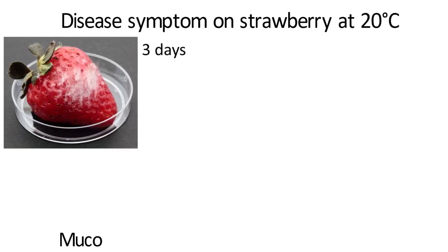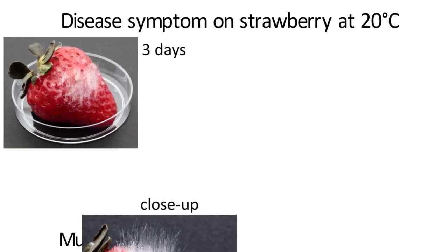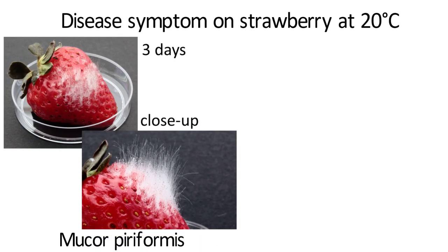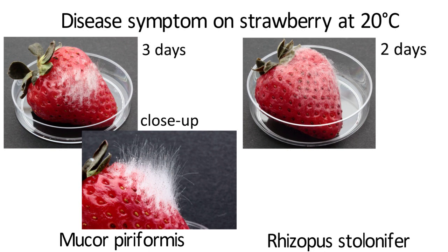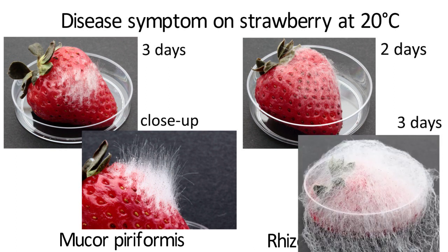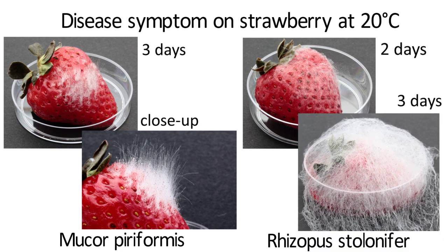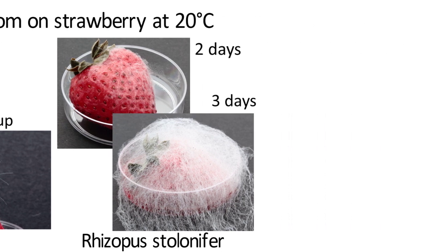Here is the disease symptom on strawberry. On the third day, Mucor piliformis developed long shining sporangiophores. For Rhizopus stolonifer, on the second day, mycelia started to creep on the surface of the fruits, and on the third day, the fruits were completely covered by mycelia.